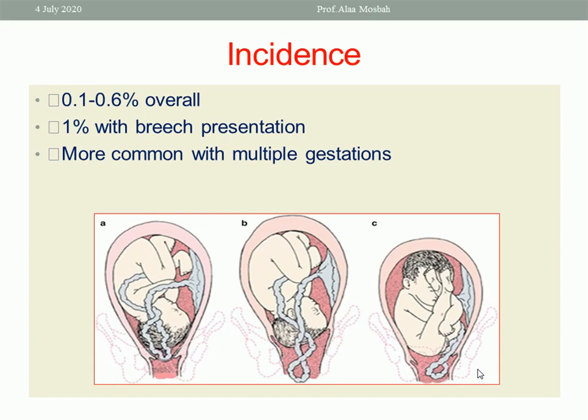What about the incidence? The overall incidence ranges between 0.1 to 0.6%. This incidence increases much with malpresentation like breech presentation, which reaches 1%, and also in transverse lie presentation the incidence is higher. Incidence also increases with multiple gestation like twins and triplets.